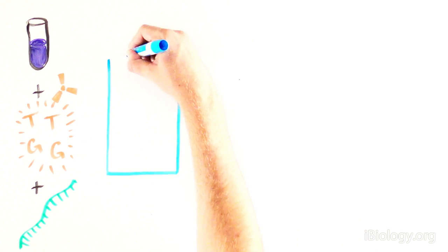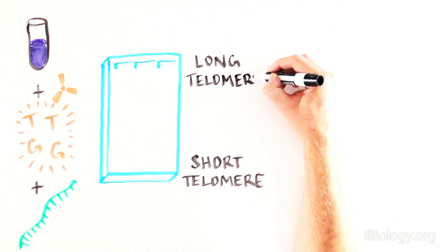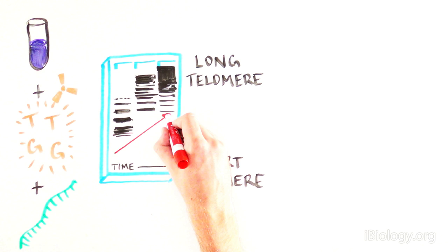Then the scientists looked at the ability of the tetrahymena extract to extend the telomere template. And what do you get? The nuclear extract of tetrahymena, when mixed with radioactively labeled T or G nucleotides, is sufficient to produce a telomere.